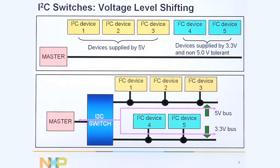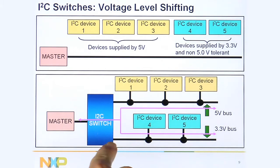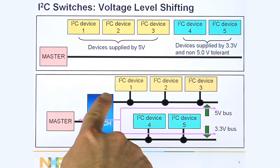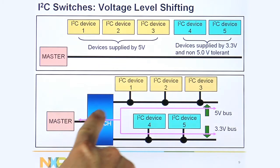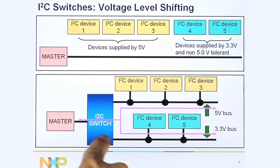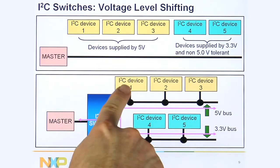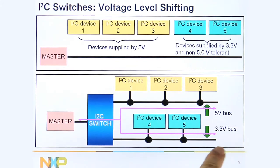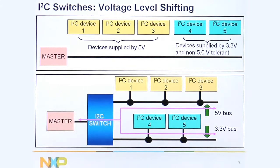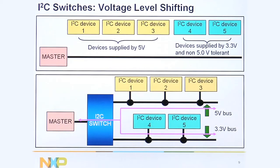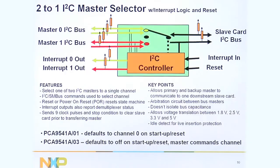The switches are also good for level translation. You can have multiple buses on at the same time. The devices are powered from 2.3 volts to 5 volts and operate up to 400 kHz. You can turn on several of the buses with pull-ups to different voltages — so for example, 5 volts, 3.3 volts, or a 2.5 volt master. So you can also use these devices for voltage level translation.